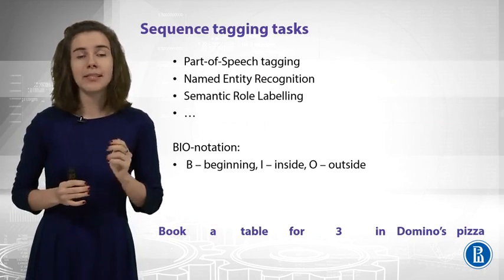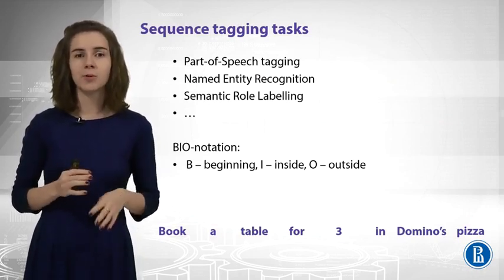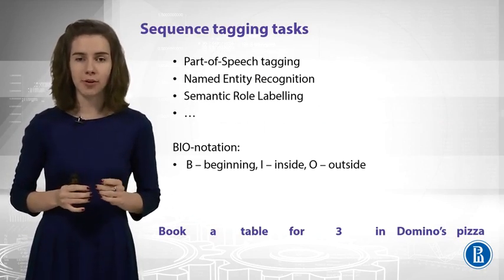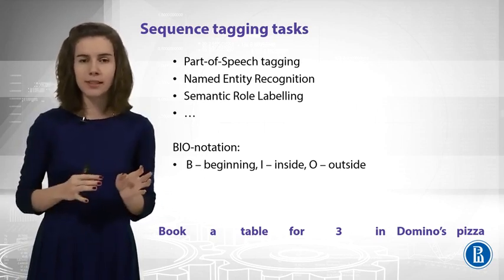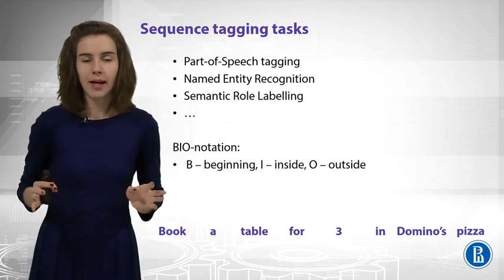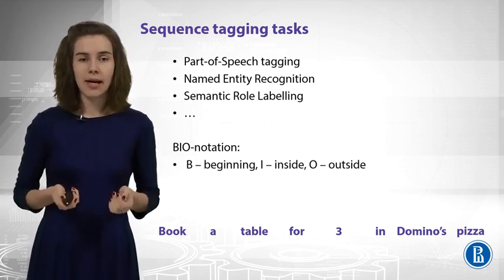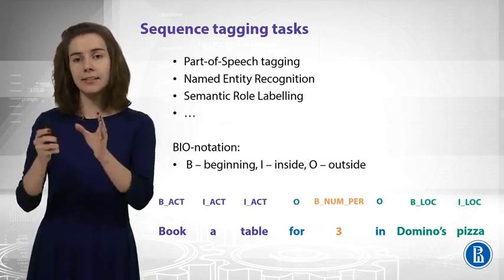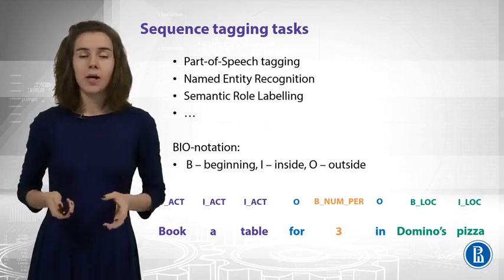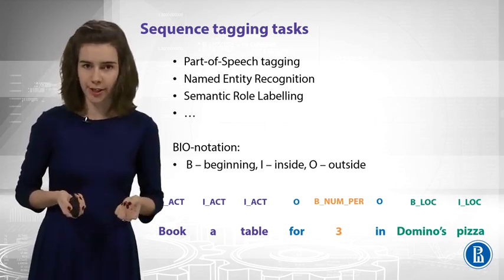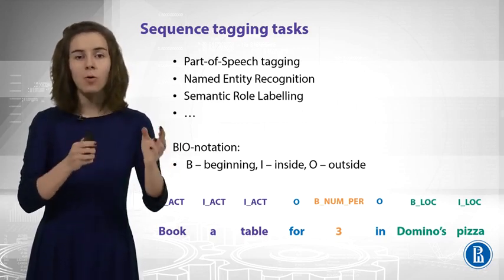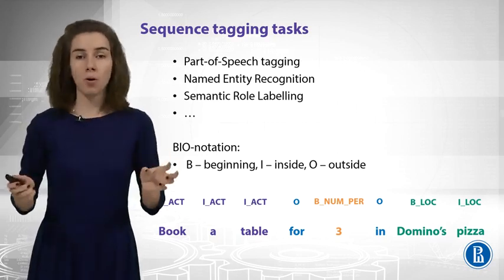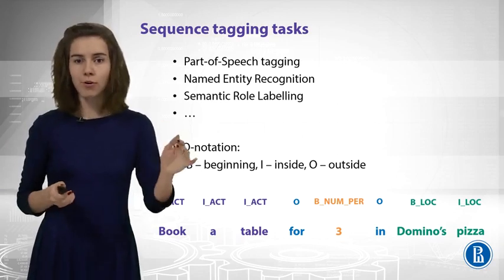This example will be about a sequence tagging task. You have heard about part-of-speech tagging and named entity recognition. This is one more task called semantic role labeling. Imagine you have a sequence like 'book a table for three in Domino's Pizza.' You want to find semantic slots — 'book a table' is an action, 'three' is a number of persons, and 'Domino's Pizza' is the location. We usually use BIO notation here, which says we have a beginning of a slot, some token inside the slot, and outside tokens that do not belong to any slot at all, like 'for' and 'in' here.